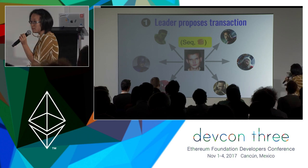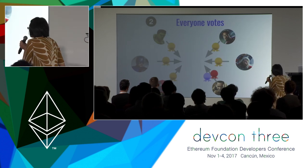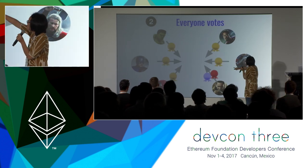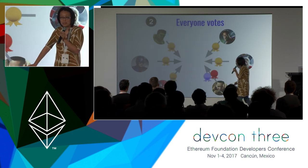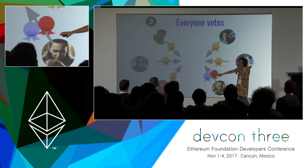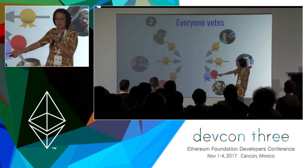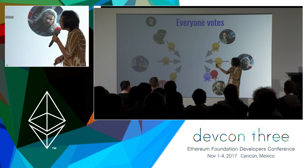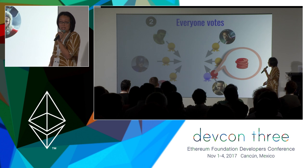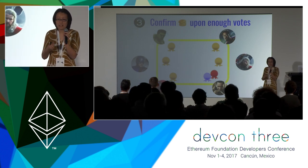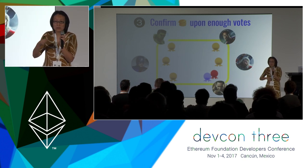When Vitalik makes the proposal, everyone's going to vote. A golden vote is voting for the golden transaction — the transaction Vitalik proposed. If you are corrupt you don't have to vote according to the protocol rule, so Loki is voting for the red transaction and the blue transaction instead of the golden one.